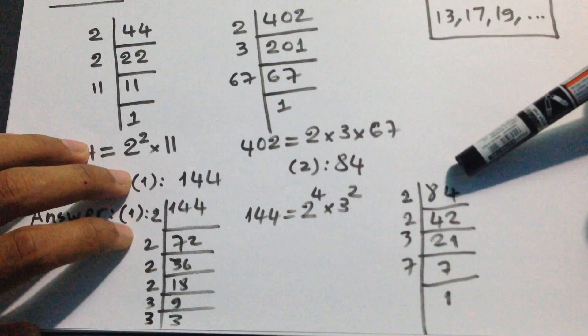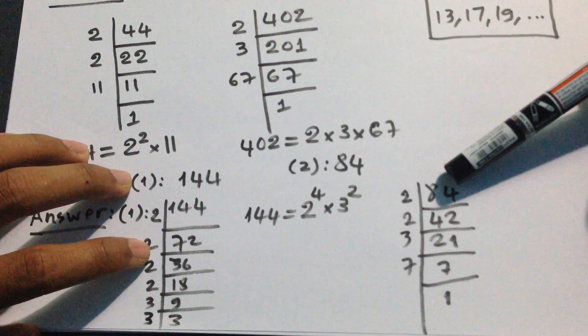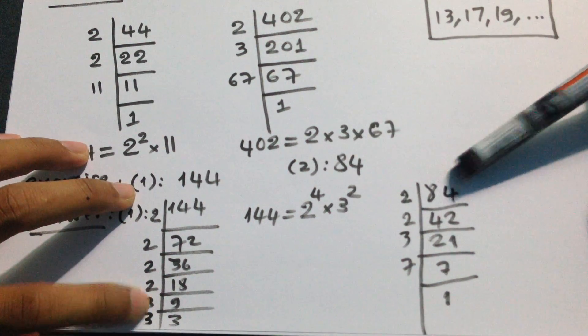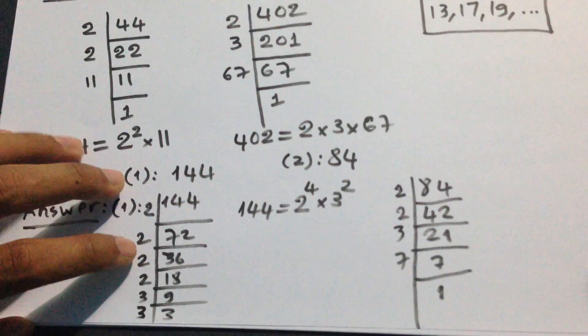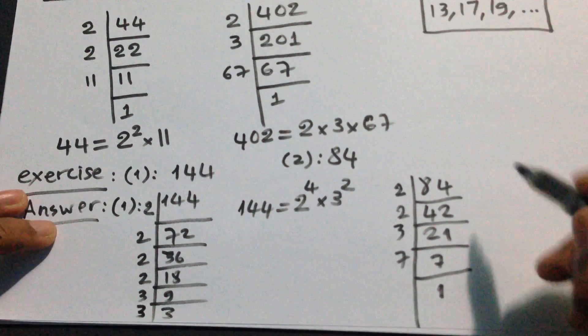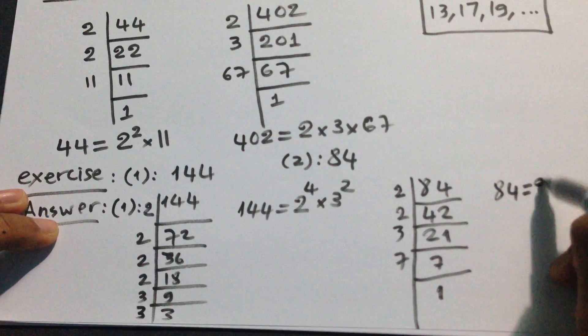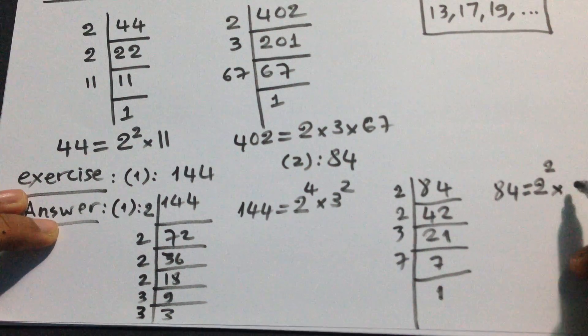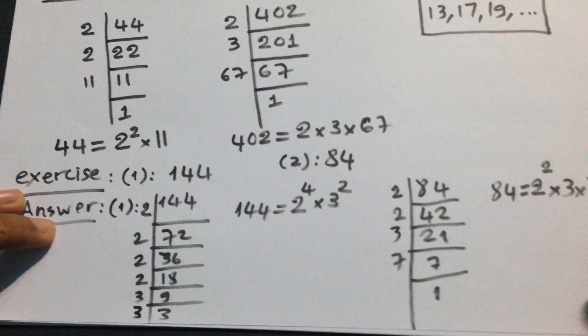So we get 2, 4 factors, and 3, 2 factors. How about 84? 84 equal to 2, 2, 3, 2, 7.